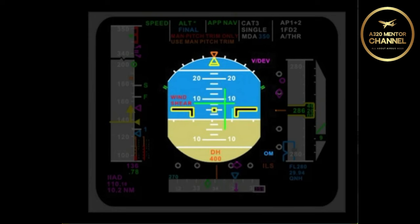Alternate law is called alternate with speed stability and alternate without speed stability. How can you tell if you have or don't have speed stability? You will not be able to tell from your aircraft, except if you have stability.